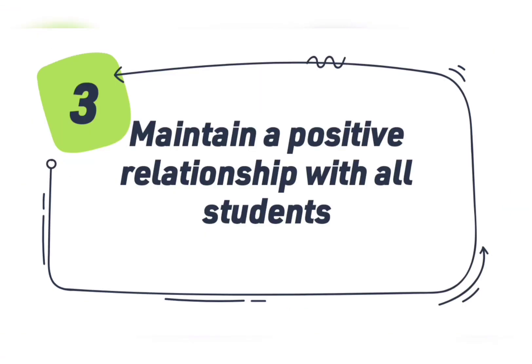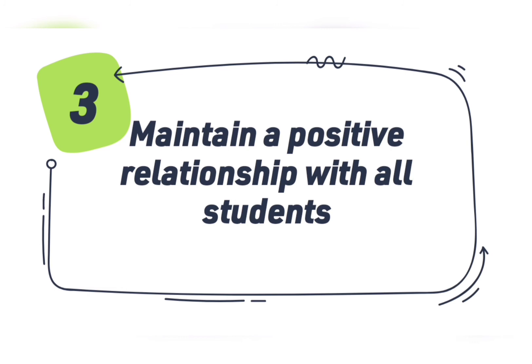The third strategy is to maintain a positive relationship with all students. Students from any linguistic or ethnic background who have positive social interactions with their teachers have better academic performance. As a teacher, reflect on how you perceive student behavior and achievement in your class, and recognize the biases you bring to the classroom as you interact with students from backgrounds different from your own. Positive teacher-student relationships entail teachers creating open communication as well as emotional and academic support. As a teacher, you should teach with enthusiasm and passion, have a positive attitude, and incorporate humor into lessons to make learning fun.